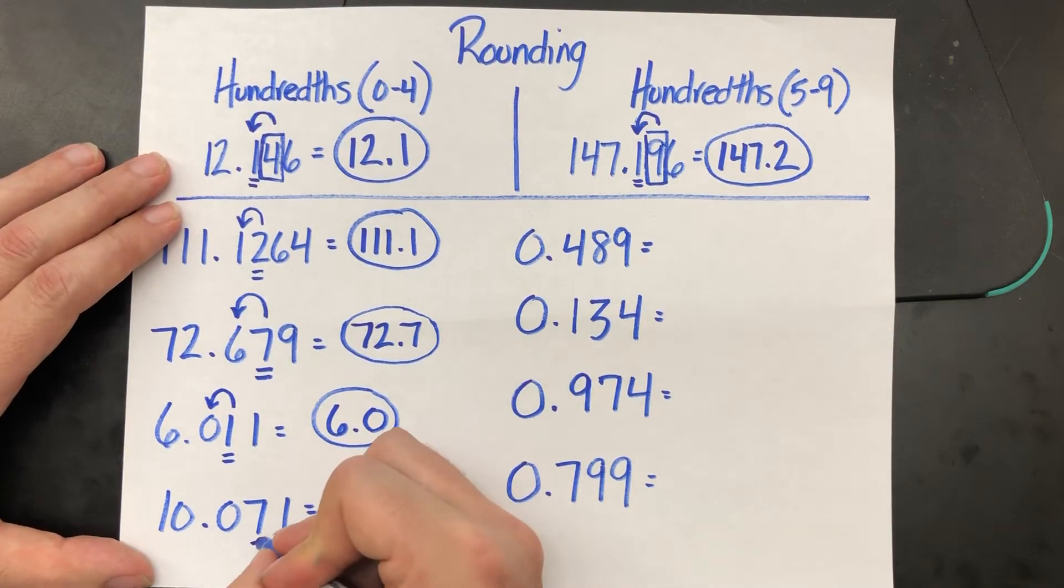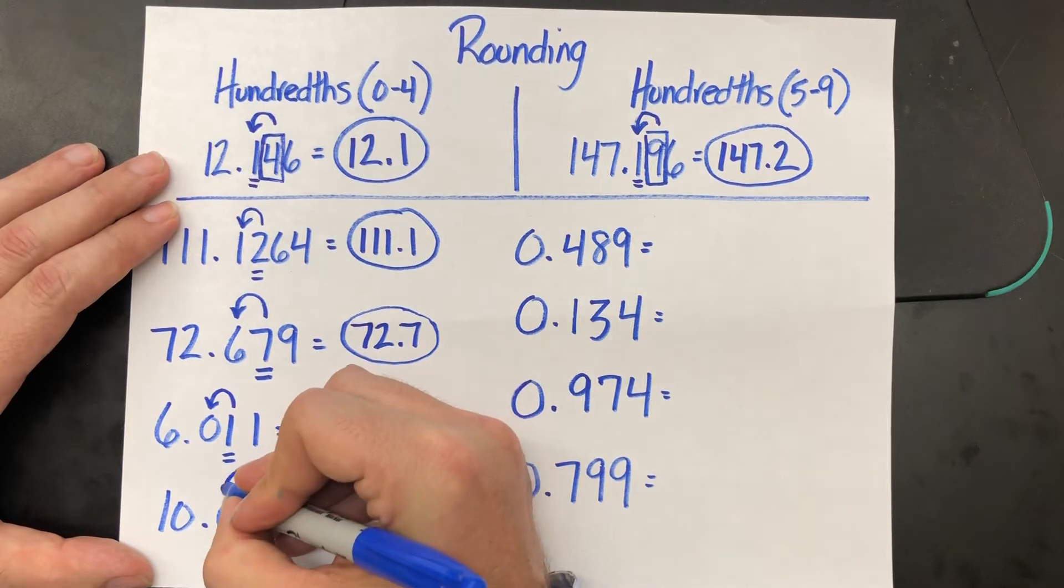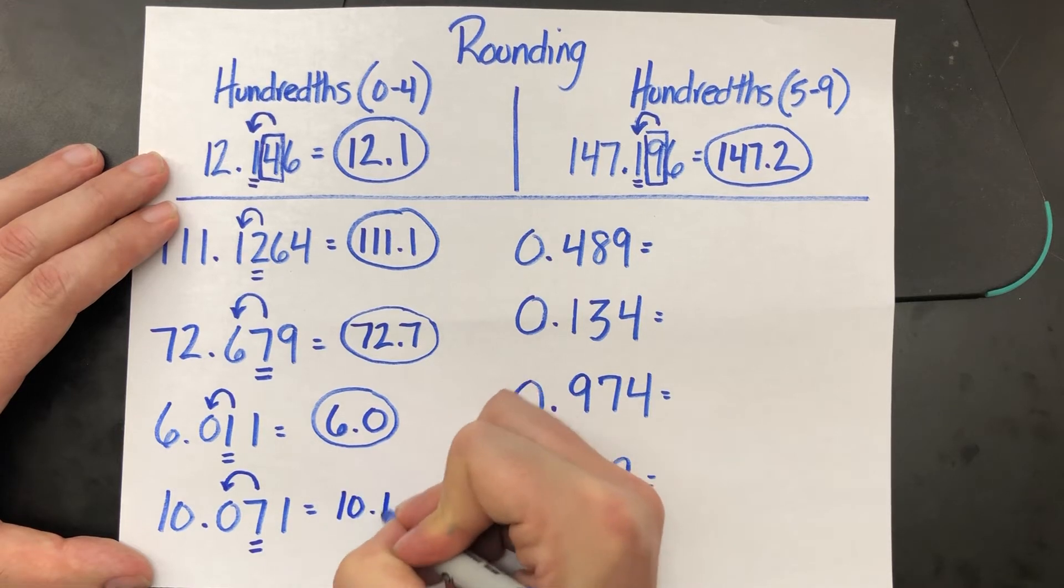Ten point zero seven one. The seven in the hundredths is between five and nine. It's going to make that zero bump up to a one. Ten point one.